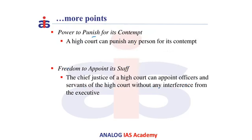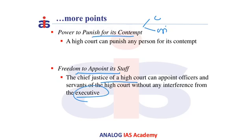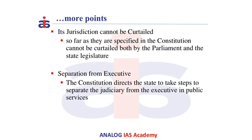The High Court has the power to punish for its contempt. That is, it has both the power to give civil contempt as well as criminal contempt. The High Court of a particular State also has the freedom to appoint its own staff — that is, normal staff like clerks can be appointed by the Chief Justice of a High Court without any interference from the Executive. The jurisdiction of a High Court cannot be curtailed, as it is specified explicitly in the Constitution.